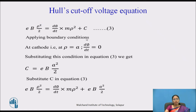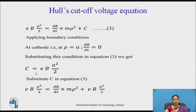Applying the boundary condition at the cathode: at rho = A (cathode radius), the angular velocity d phi/dt = 0, because the electron is just at the verge of emission and has not attained any angular velocity. Substituting into equation 3 gives C = EB·A²/2, which is the constant of integration.